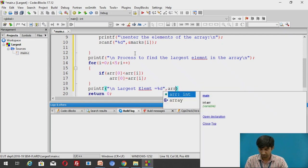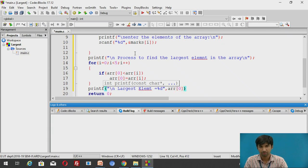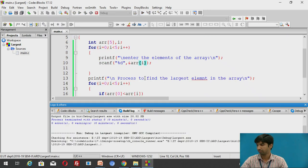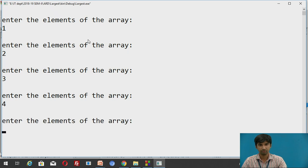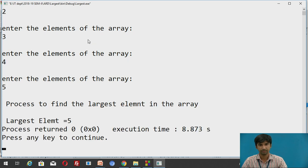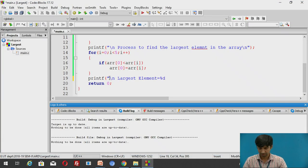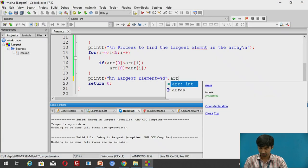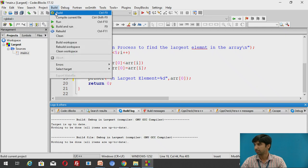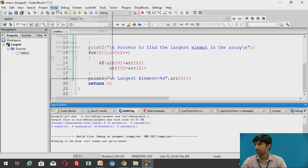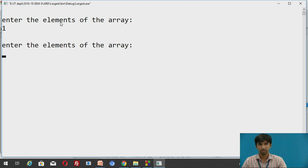comma array of zero. So I have compiled it. Enter the elements of the array. It is asking one two three four five so the largest element is equal to 5. I'll go for build, I'll go for compile, I'll go for run. So one two three four five, largest element is 5.